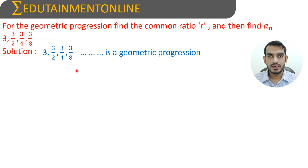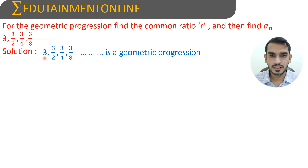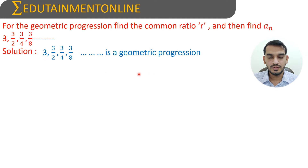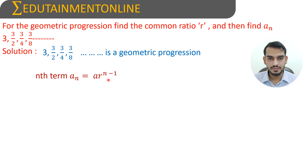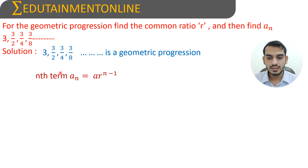So this is the geometric progression. The first term is denoted by A. We need to find the nth term using the formula of the nth term of a GP, which is An equals A into R power N minus 1. We need to find R first, which is the common ratio.